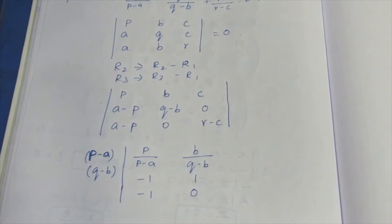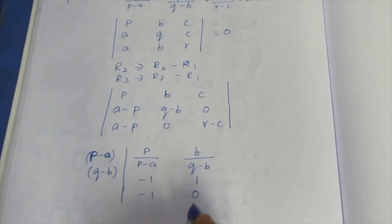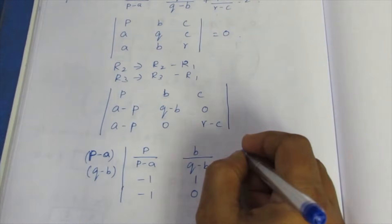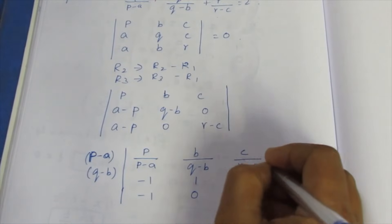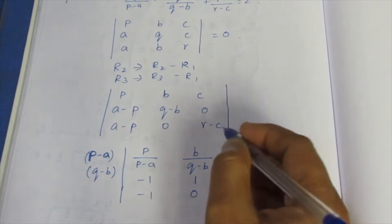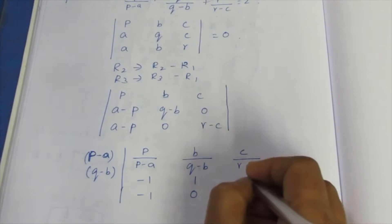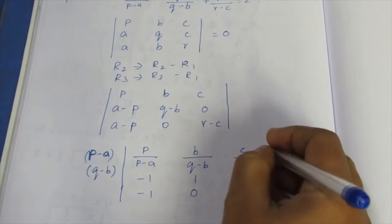Zero divided by anything will be zero. Zero divided by anything will be zero. C divided by R-C, and R-C equals 1.